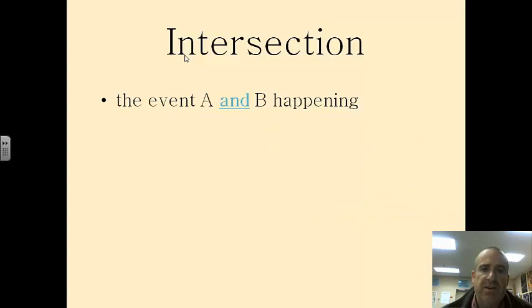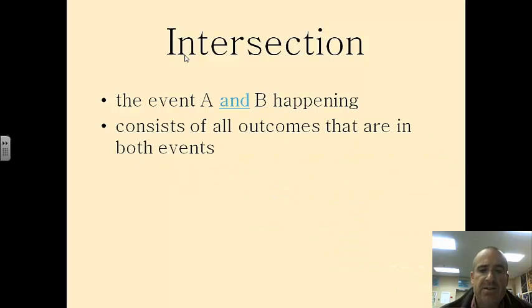An intersection, on the other hand. An intersection is the event A and B happening. So it consists of all the outcomes that are in both events. So in this case, for an intersection, it has to be both.